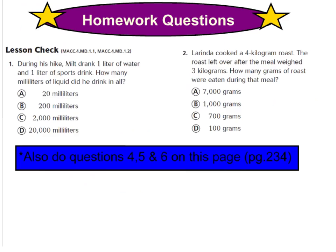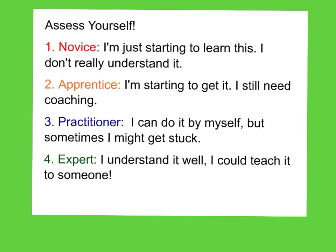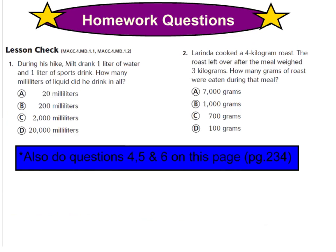Here are your homework questions for tonight: numbers 1 and 2 on GoMath page 234, then numbers 4, 5, and 6. We are skipping number 3 because we need a protractor and might not have one at home. When you're done with your homework, don't forget to assess yourself — novice, apprentice, practitioner, or expert — and draw your best smiley face next to your assessment. Good luck on your homework tonight, and I will see you tomorrow. Bye!